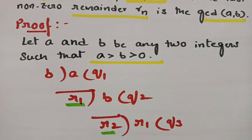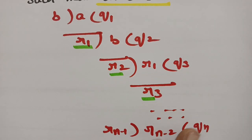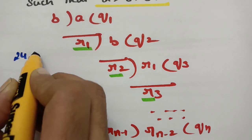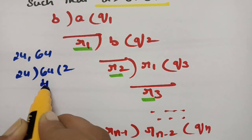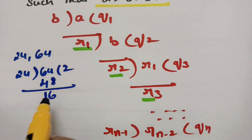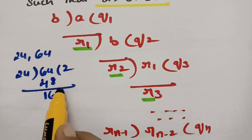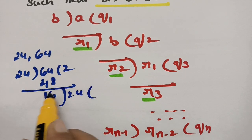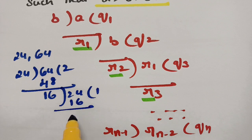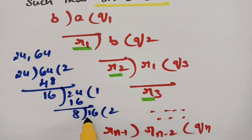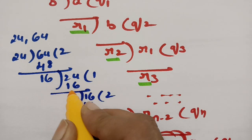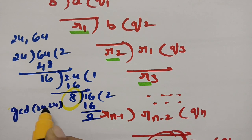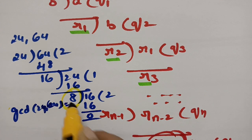Let me give you one example. Take GCD of 24 and 64. 64 divided by 24 gives quotient 2 (48) and remainder 16. So R1 = 16. Next, 24 divided by 16 gives quotient 1 and remainder 8. So R2 = 8. Next, 16 divided by 8 gives 2 exactly, remainder 0. Since Rn+1 = 0, the last non-zero remainder is 8. Therefore GCD(24, 64) = 8.